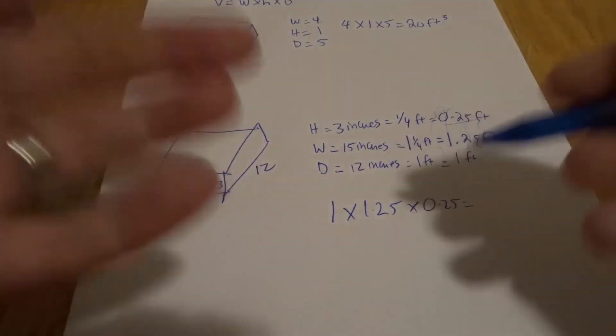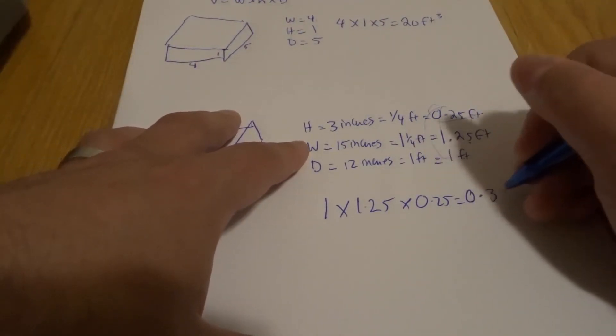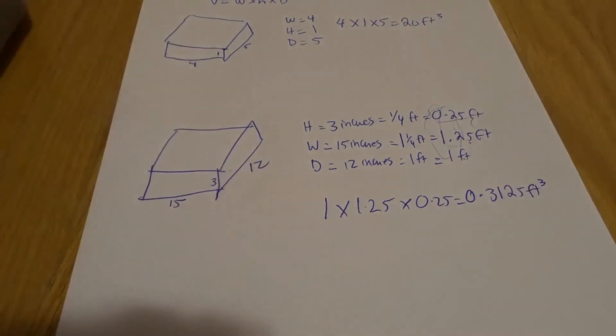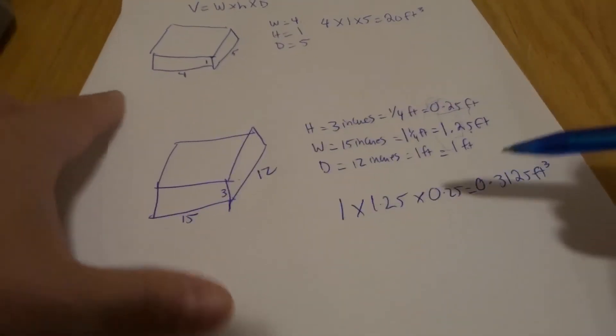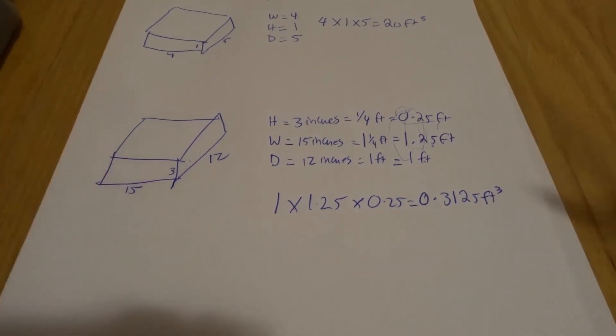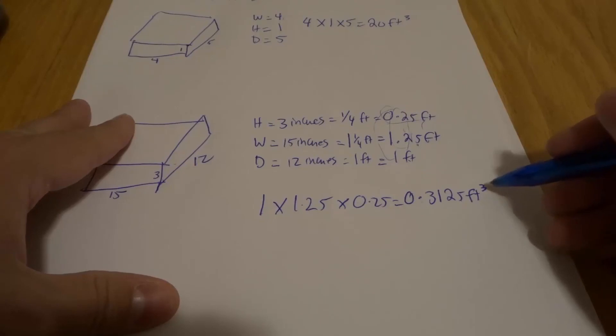When you multiply those numbers together and put them in a calculator, you're actually going to get 0.3125 feet cubed. So the answer when I multiply these together is 0.3125, and then I put my feet and then I put my cubed symbol, because whenever you're calculating volume, especially in cubic feet, it's cubed - which is just a little three on the top there, as you can see right there.